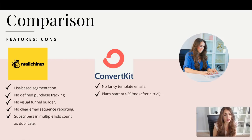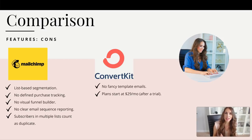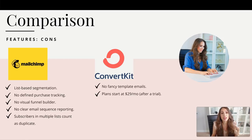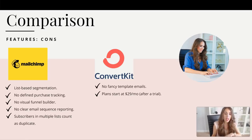The next con is no clear email sequence reporting that is hyper-specific. I like being able to tell which of my sequences are performing the best, which emails inside those sequences are getting the most open rates and click-through rates. I also want to see which forms my subscribers are signing up from and how many subscribers I've gotten that day. There is some reporting in MailChimp — it's just not as detailed as ConvertKit.